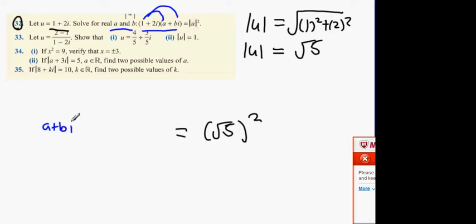Upon completion of that, you're going to multiply by 2i, and then you're going to get 2ai. And then you're going to get 2i by bi. Anybody know what 2i by bi is? 2bi squared.